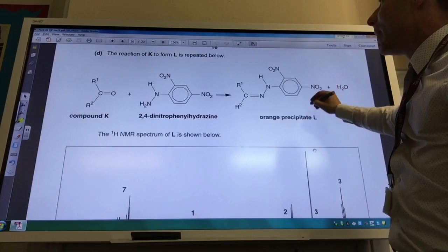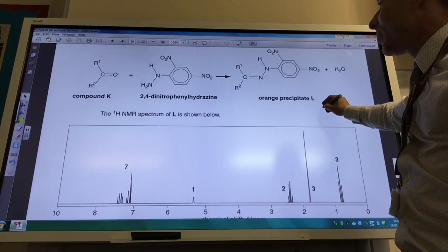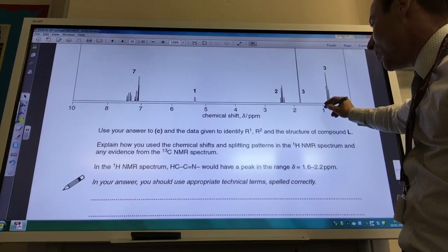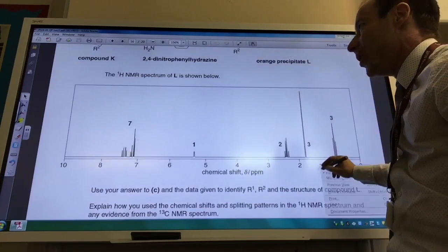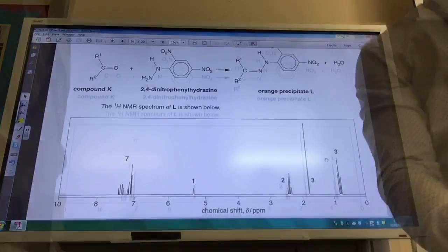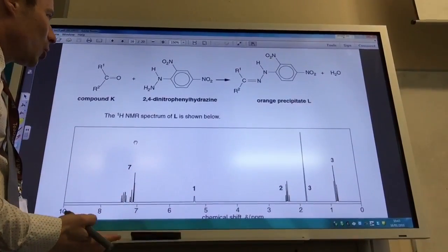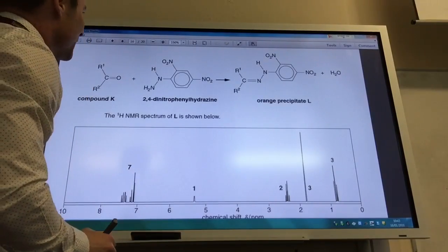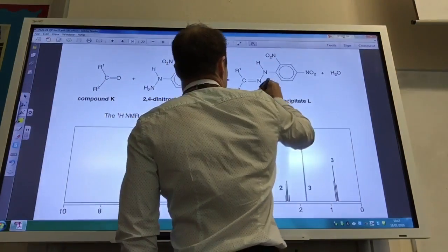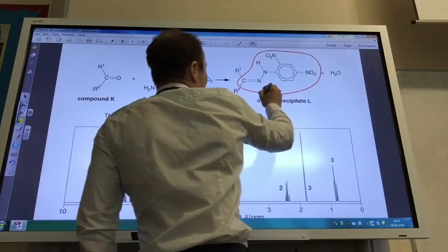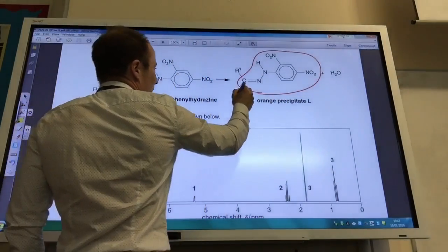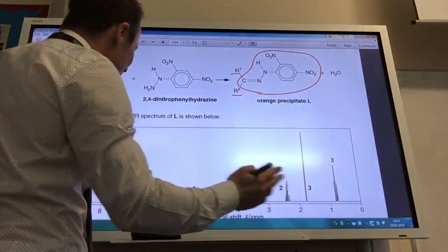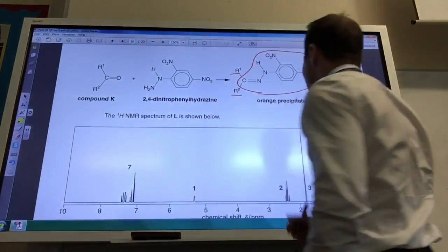The reaction of K to form L is repeated below, that's handy. And the NMR spectrum of L is shown below. Use your answer to see in the data given to identify R1 and R2 and the structure of the compound. The main thing for this one is it looks incredibly complicated but actually it's not too bad because they've given you all of this that you know about. Now the only thing you don't know is R1 and R2.